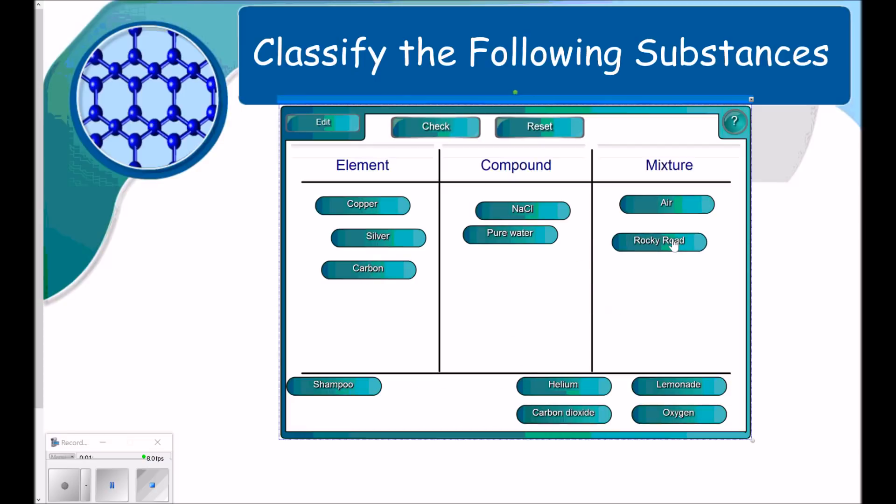Rocky Road, this is definitely a heterogeneous mixture. You can see the different pieces in the Rocky Road. You can see the chocolate ice cream and the marshmallows, et cetera. Carbon dioxide, it's CO2. It's carbon and then oxygen, so it's two different elements bound to each other. Lemonade is going to be a mixture, and it's going to be homogeneous. You can't see the different particles in lemonade, but it's water, and then sugar, and then lemon flavoring. It's different stuff mixed together, but it looks like one thing.